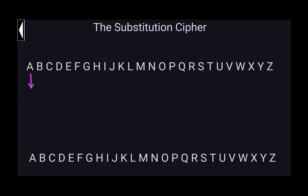Let's say I choose to transform the letter A into capital L. So A will be transformed into capital L. Down here I have my alphabet in uppercase again, and once I use a letter I cannot use it anymore. So I'm going to cross out the letter L from the alphabet below to indicate that I'm not going to use it again. That means I cannot use L anymore.